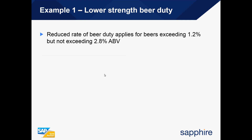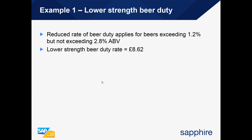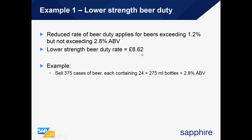The first example looks at lower strength beer duty. There is a reduced rate that applies for beers exceeding 1.2% but not exceeding 2.8% ABV, and the lower strength beer duty rate is £8.62. We are selling 375 cases of beer each containing 24 bottles at 275 ml with an ABV of 2.8%. We first convert to total litres per case: 24 bottles multiplied by 275 ml gives 6.6 litres per case.